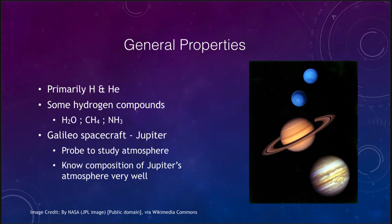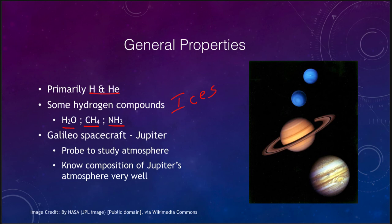All of the giant planets are made primarily of hydrogen and helium, and their next highest components are what we call the hydrogen compounds — sometimes called ices. Those are things like water (H2O), methane, and ammonia. These three make up a large percentage of the remaining composition, since hydrogen and helium are the vast majority, with the rest being these icy compounds of water, methane, and ammonia.